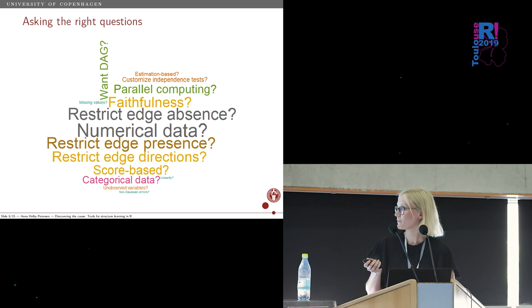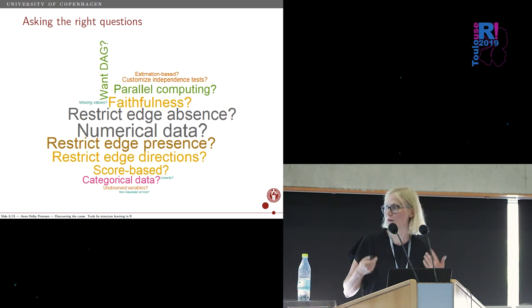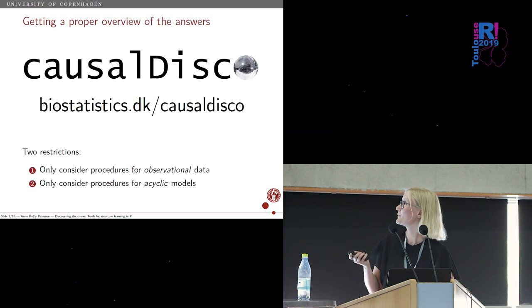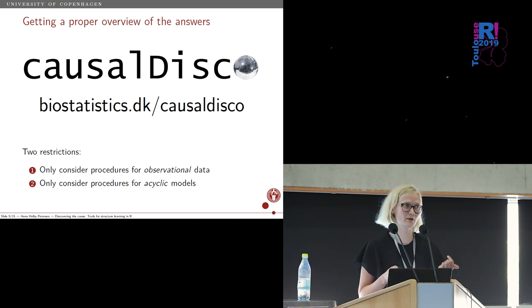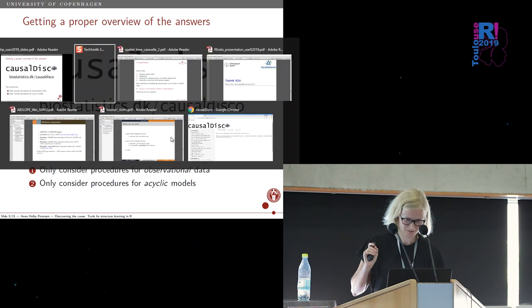A little bit more about this question that you might want to ask. I made a little word cloud here, so the size represents how many of the procedures fulfill that criteria. You might want to be interested in the type of your data, like whether it's numerical, or maybe you want to restrict whether some edges can be there or not if you have some background knowledge you want to include. How better to produce your results than in a little Shiny app? So I put a Shiny app here. Just two restrictions for the procedures that I looked at: I only considered methods for observational data and only considered acyclic models.